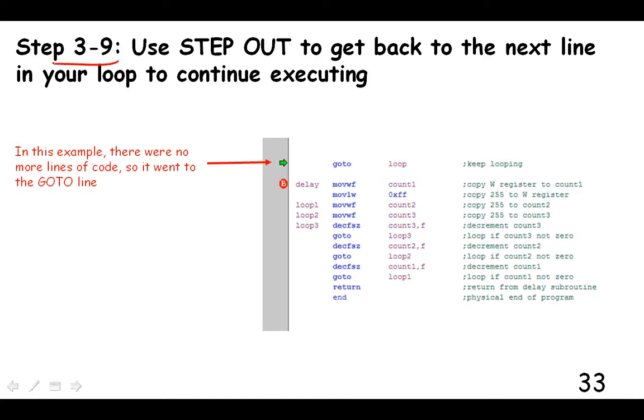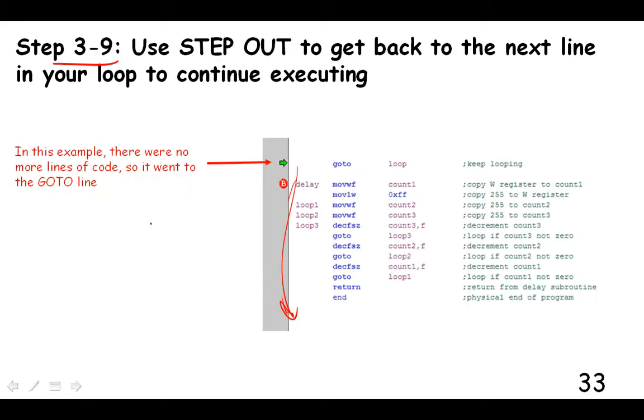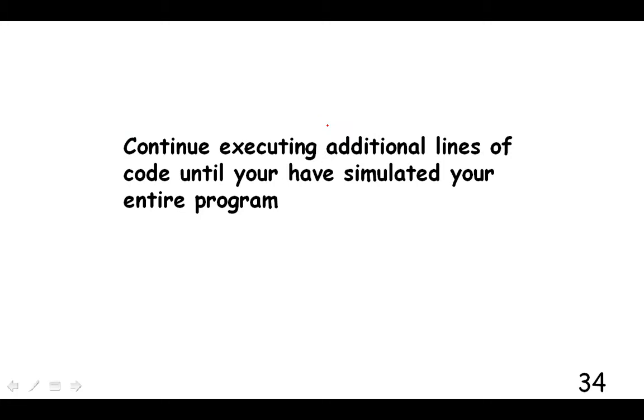Step three, nine. Oh, so once you've run this loop and then we know how long it takes, we click step out. Step out is this icon right here to get back into the next line in your loop, in the loop that we wrote and then we can execute the other one. So it might've been turn the red one on and then you have a delay of 10 seconds and then it comes back in here and it turns the red one off, then turns the yellow one on or whatever you're going to do. So you continue executing your additional lines of code until you've simulated your entire program and debugged it and made sure everything is working.